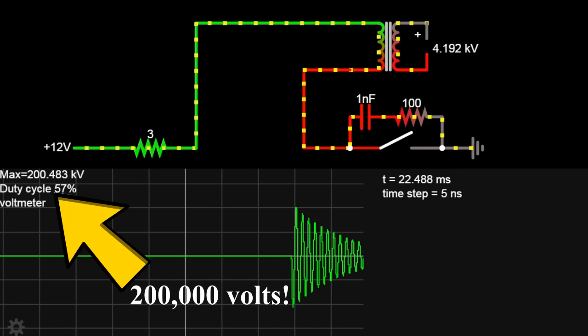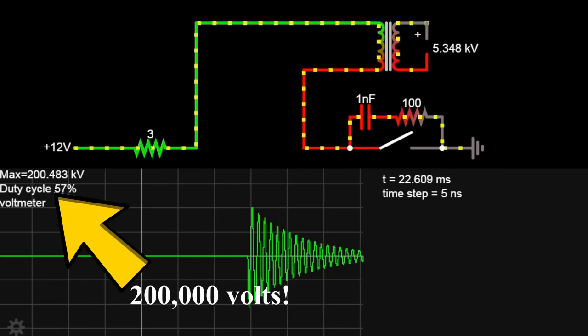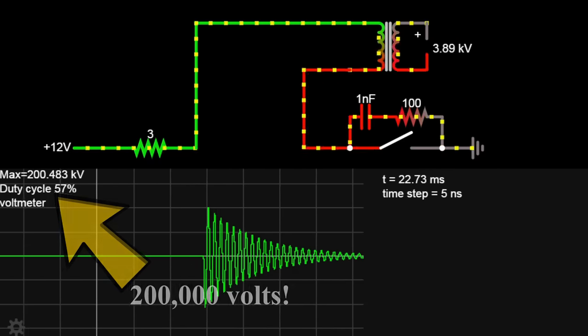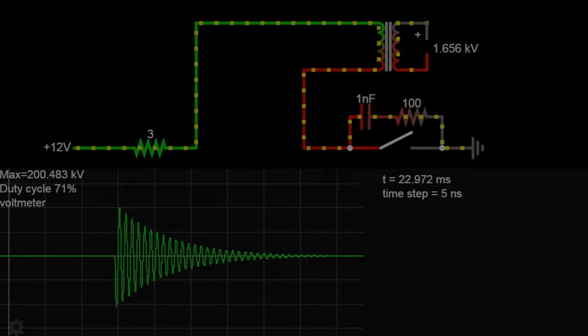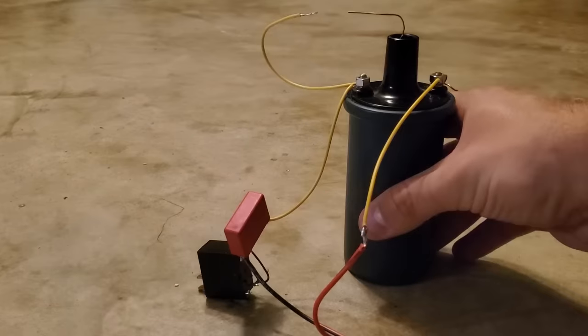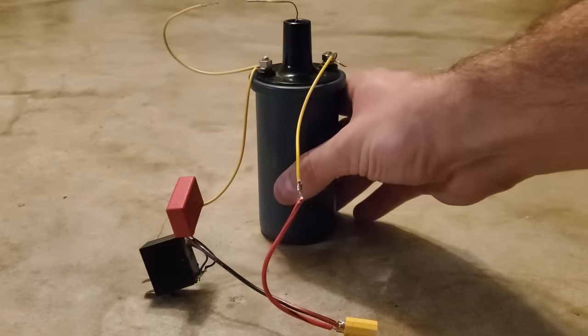Now, realistically, a car ignition coil will probably only handle 30 or 40,000 volts before the spark jumps between the windings, but this just shows the immense power of an inductive spike. Okay, that's enough theory. Let's see how to build some circuits that can actually do this.